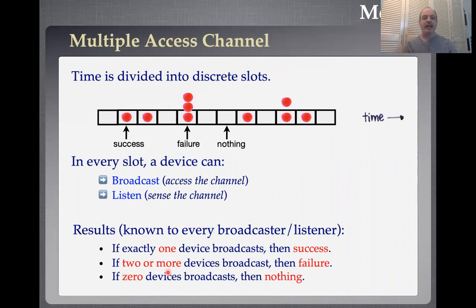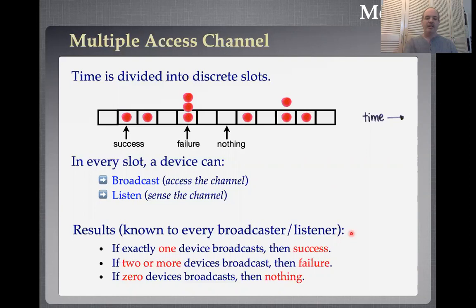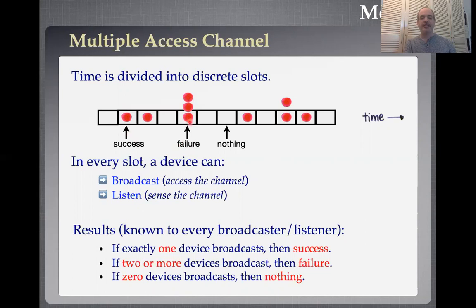Let me introduce the terminology I'm going to use. Think about a multiple access channel where time is divided into discrete slots. In every slot, a device can do one of two things: it can either broadcast, or it can listen — sense the channel and determine what's going on. If you listen, you learn everything. If exactly one device broadcasts, it succeeds and everyone knows it. If two or more devices broadcast, there's a collision, and again everyone knows that. If zero devices broadcast, there's silence. You succeed if and only if there is exactly one broadcast.